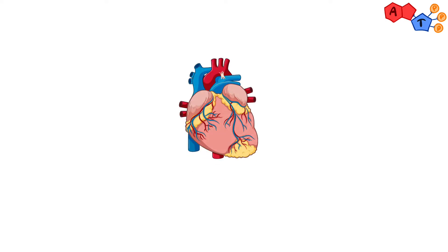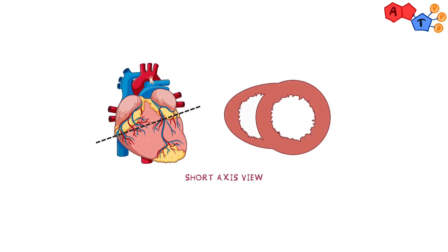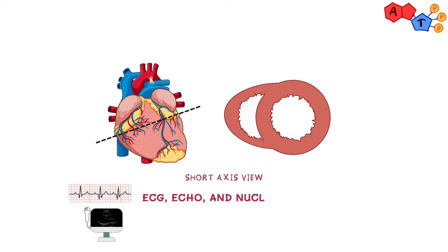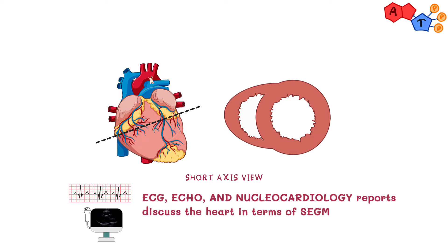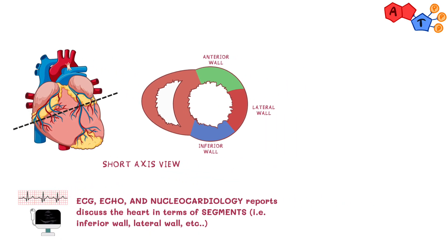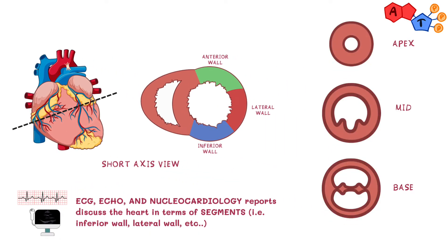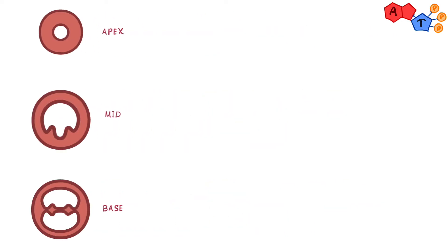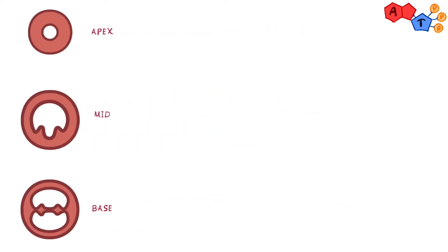Now that we understand this, let's take a look at the heart in the short axis view. When we look at electrocardiograms, echocardiograms, and nuclear cardiology reports, all of these reports discuss the heart in terms of segments — i.e., inferior wall, lateral wall, etc. This is the schema that refers to those segments as we've divided the heart into apex, mid, and base. We can further divide each level into further segments.